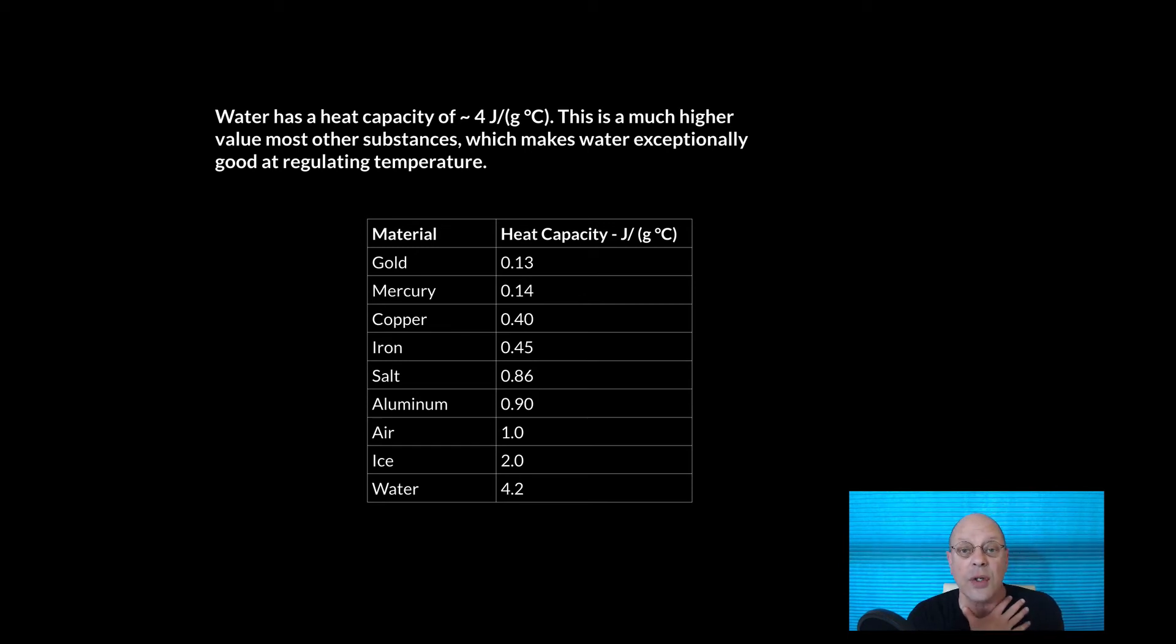And so you get sort of this thermal inertia effect from the oceans which regulates pretty much the global temperatures. Okay, so some of the materials and their heat capacities. So metals, you know, things like gold, mercury, copper, iron as shown in the table there, these things have heat capacities of a few tenths. Order of magnitude estimate about a tenth of a joule per gram per degree centigrade.